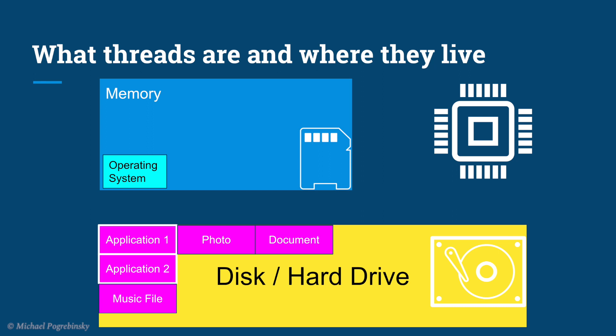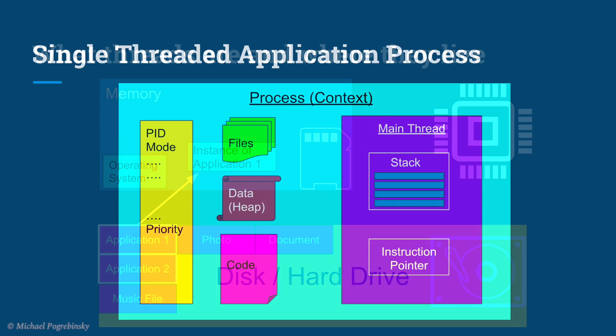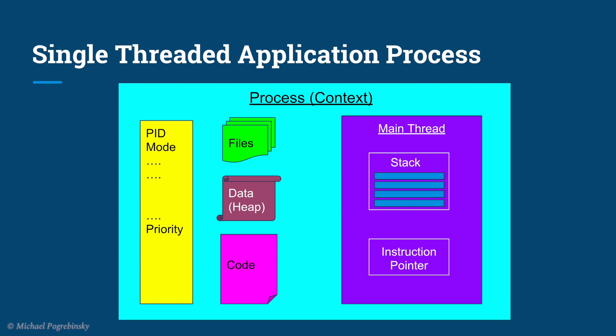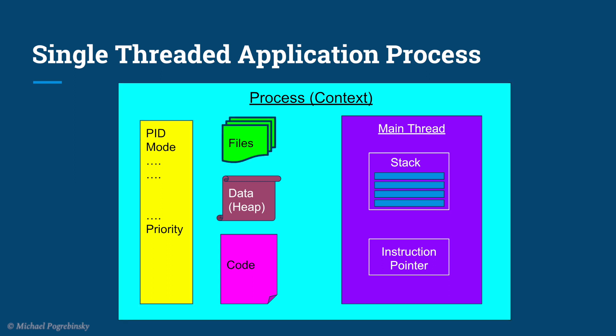All our applications — such as a text editor, web browser, or music player — reside on disk as files, just like any other music file or document. When the user runs an application, the operating system takes the program from disk and creates an instance of it in memory. That instance is called a process, or sometimes a context of an application. Each process is completely isolated from any other process. A process contains metadata like a process ID, open files, the code to be executed, and the heap which holds application data.